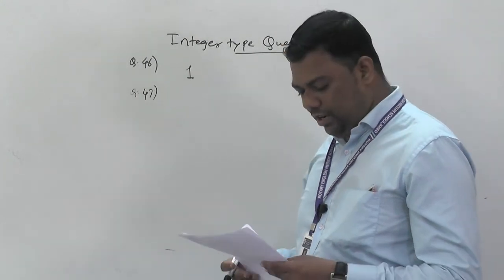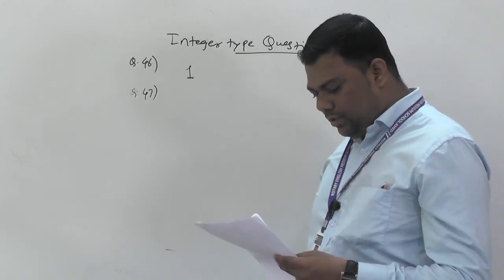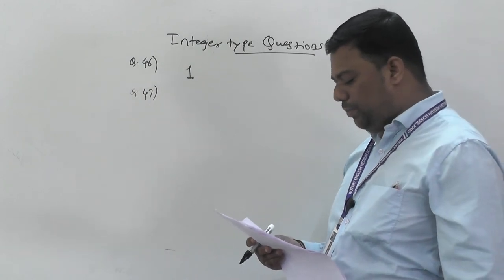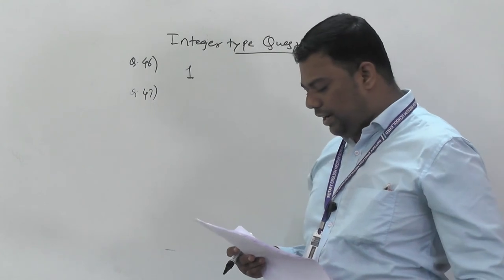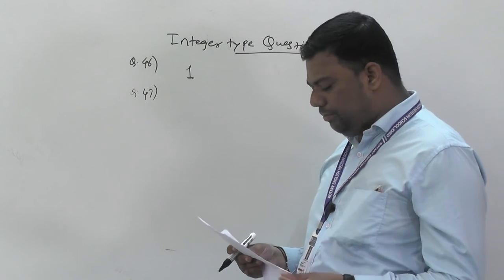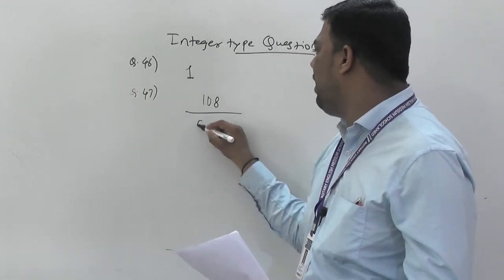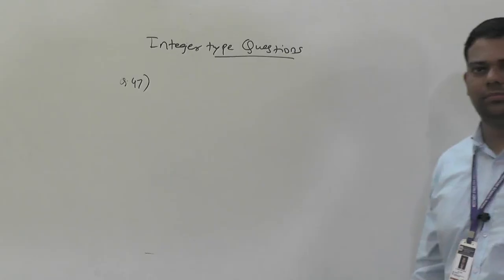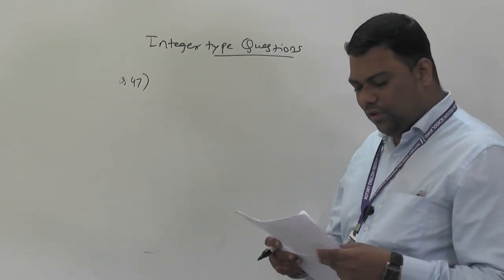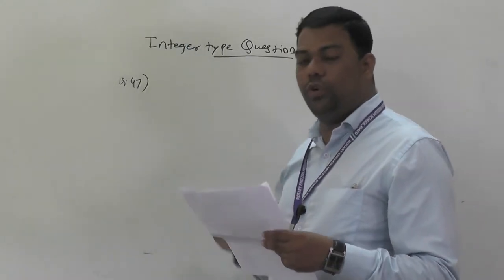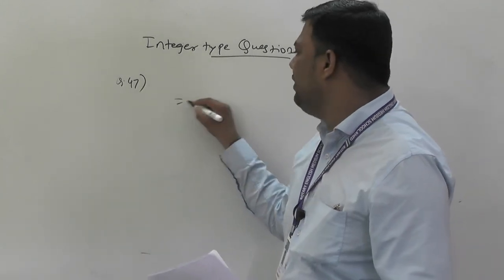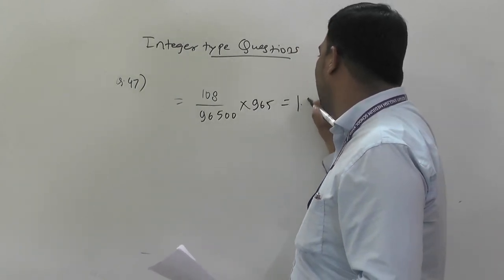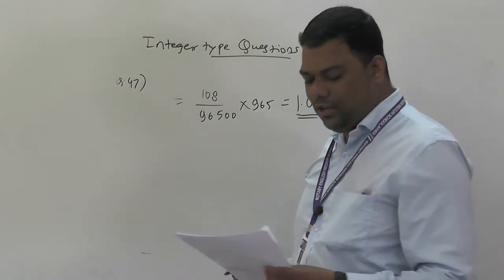Question number 47: a silver cup is plated with silver by passing 96 coulombs of electricity. Calculation: (108 / 96500) × 96 ≈ 0.107 grams of silver deposited.